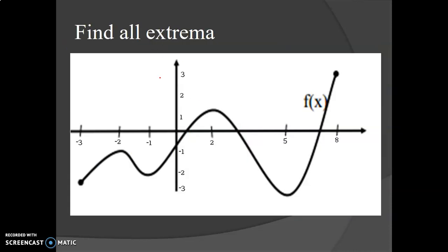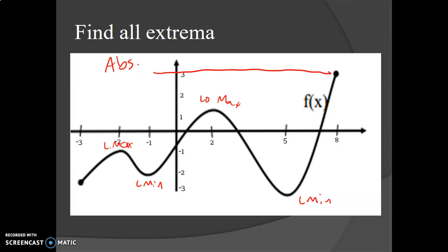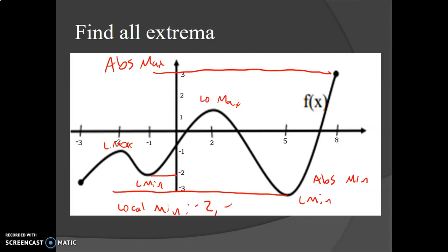If we're asked to find all the extrema, first let's look for locals — we have a local max, a local min, another local max, and another local min. To find the absolute max and min, since we are on a closed interval, we're going to have an absolute max and min. The highest point is our absolute max, and the lowest local min is also our absolute min. A point can be both local and absolute. You can have more than one local max or min, but you can only ever have one absolute max and one absolute min — you might have none, but not more than one.